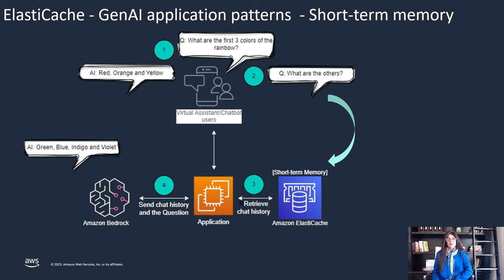Here is a simple example. In Step 1, the user asks a question about the first three colors of the rainbow. The model responds with red, orange, and yellow. The follow-up question in Step 2 is: what are the other colors? This means the model needs history of what the user asked earlier and what it responded with, so that it can present the other colors, not the same ones from its first answer. We retrieve this chat history from ElastiCache in Step 3, provide the previous answer to the model in Step 4, so that it can respond with the rest of the colors. It then listed green, blue, indigo, and violet — without repeating the first three colors — as the model understood what it already responded to the user with based on the history.